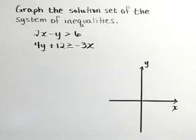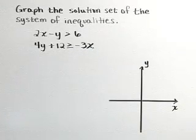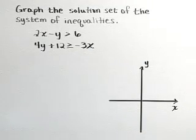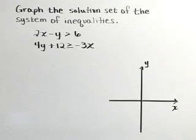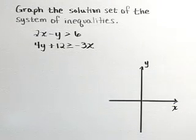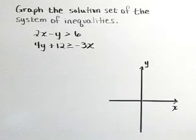Graph the solution set of the system of inequalities: 2x minus y is greater than 6, and 4y plus 12 is greater than or equal to negative 3x.